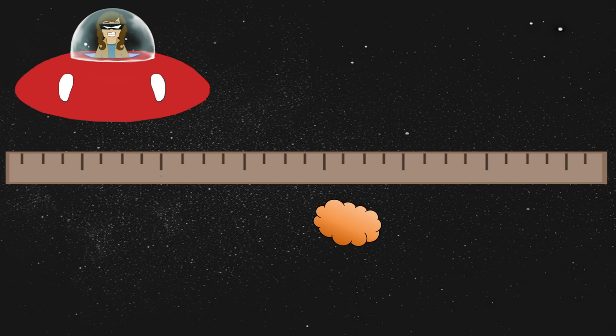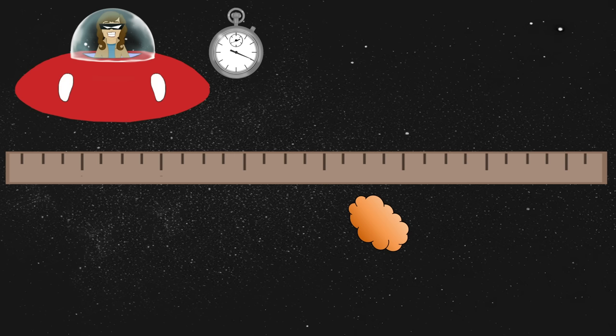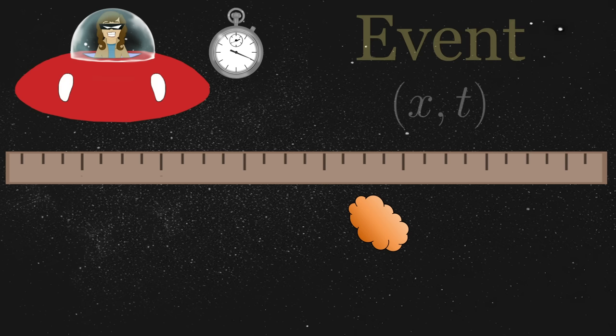Furthermore, any time she measures the location of a passing object, she uses her onboard clock to record the time at which it occurred. The result is thus an ordered pair of numbers, x, t, which physicists refer to as an event.